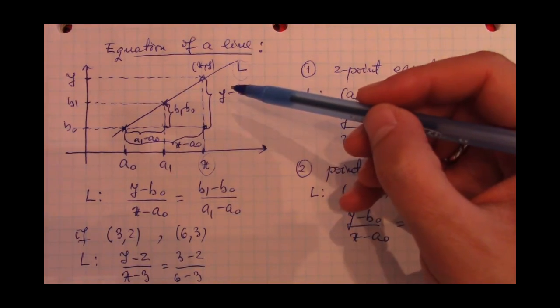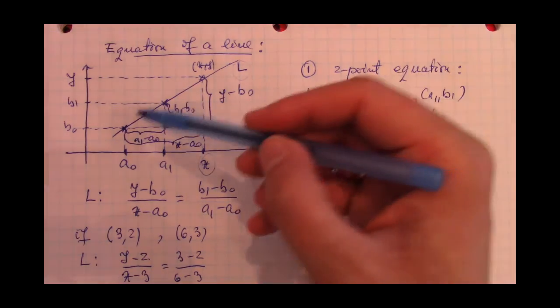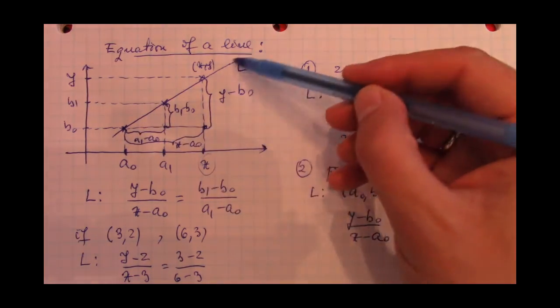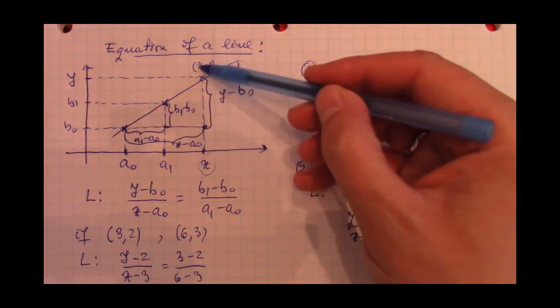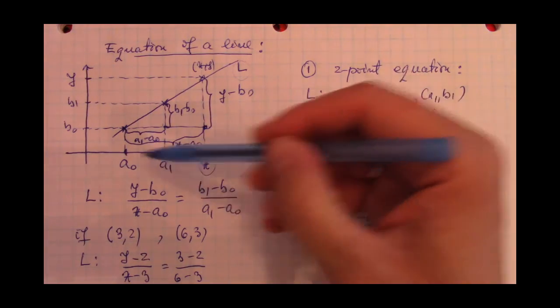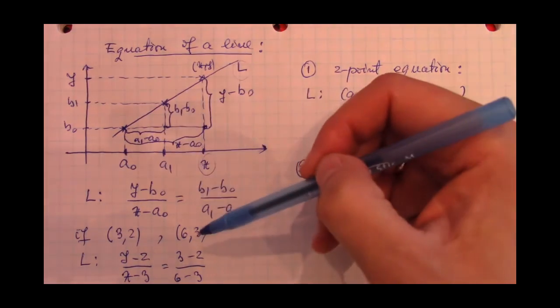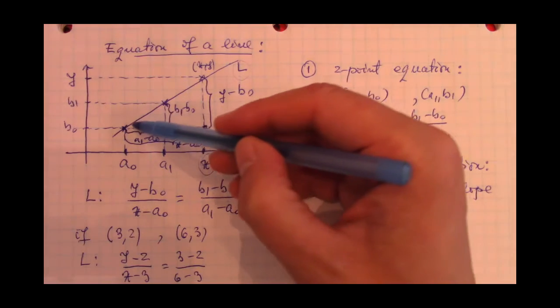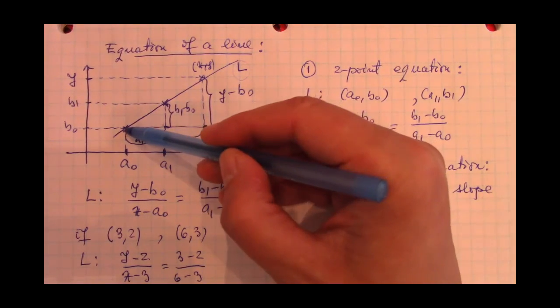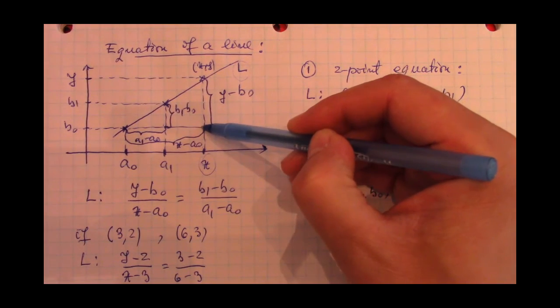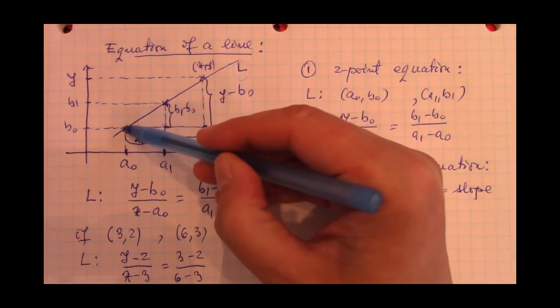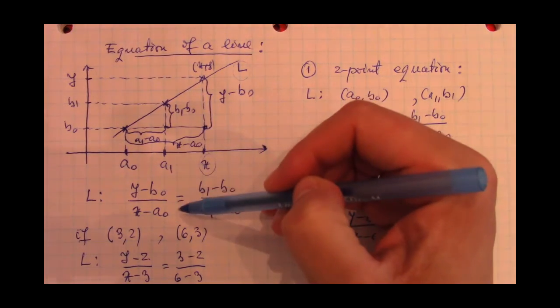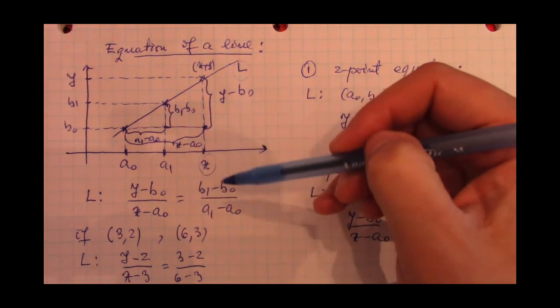Now, if we remember from basic geometry, we see that this line L with lines parallel to the x-axis and respectively the y-axis of the coordinate system determine a big triangle here from this point to this point and to this point is one triangle. And from here to here to here is another triangle. And again, the two triangles are similar.